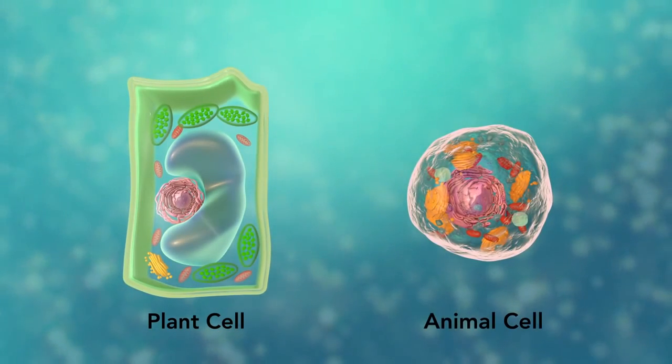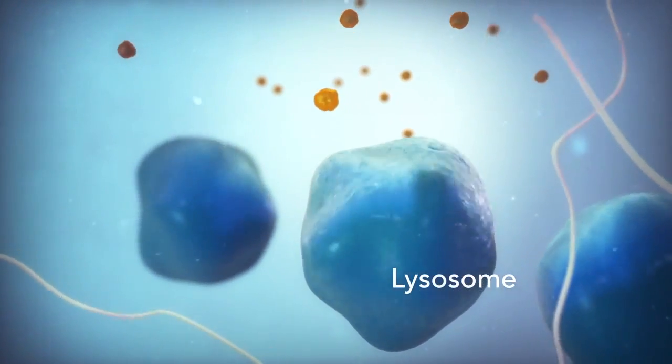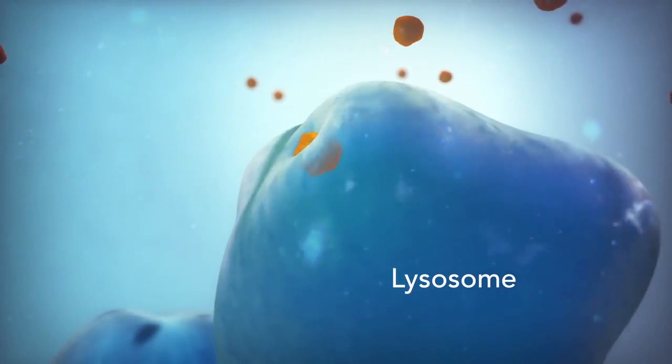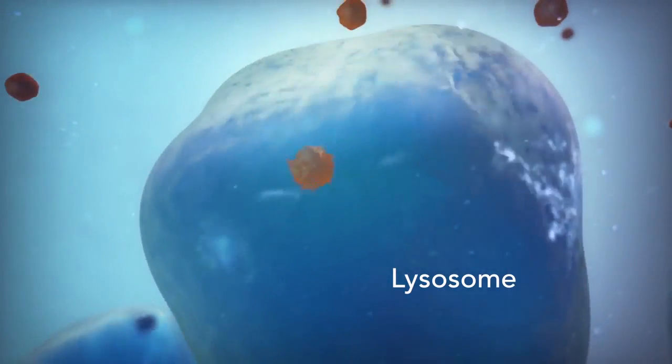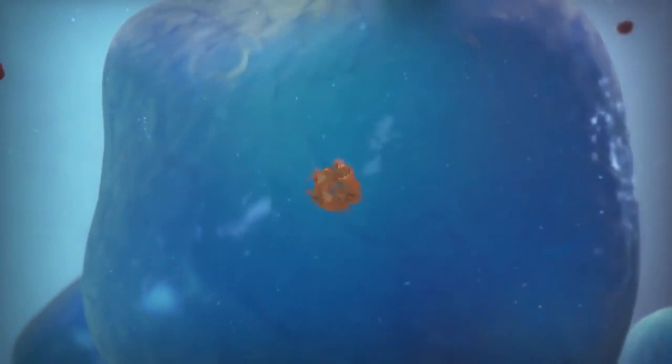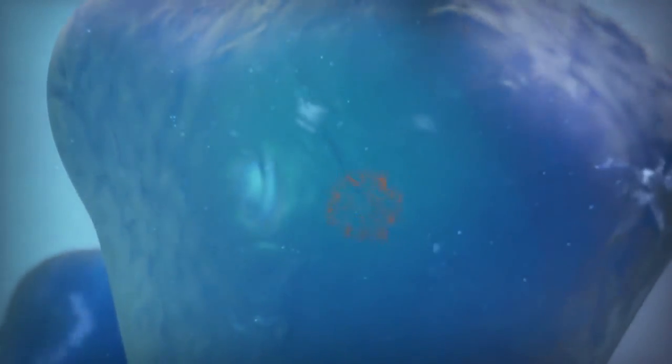Going back to the animal cell, you will see an organelle called a lysosome. Lysosomes are the garbage collectors that take in damaged or worn-out cell parts. They are filled with enzymes that break down this cellular debris.